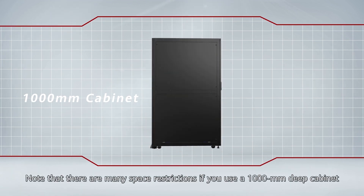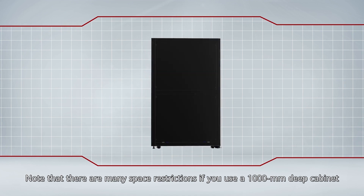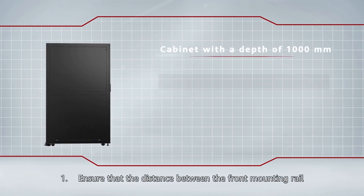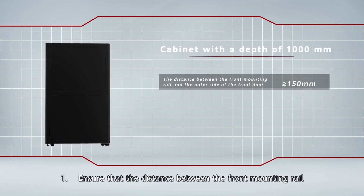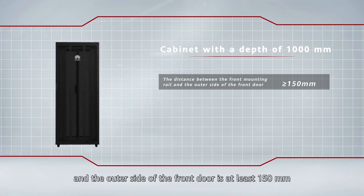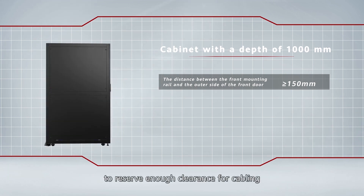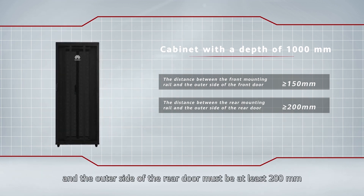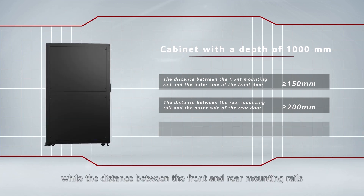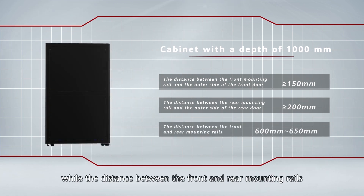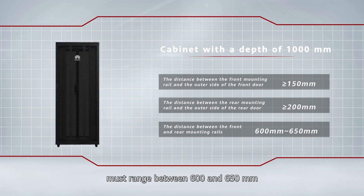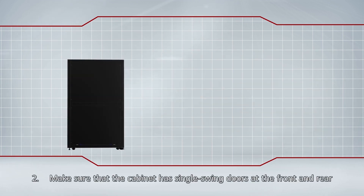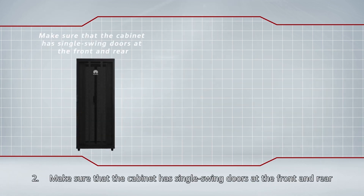Note that there are many space restrictions if you use a 1000-millimeter deep cabinet. You need to check three key issues during the site survey: ensure the distance between the front mounting rail and the outer side of the front door is at least 150 millimeters. The distance between the rear mounting rail and outer side of the rear door must be at least 200 millimeters, while the distance between the front and rear mounting rails must range between 600 and 650 millimeters to guarantee adequate cabling clearance for the PDU.